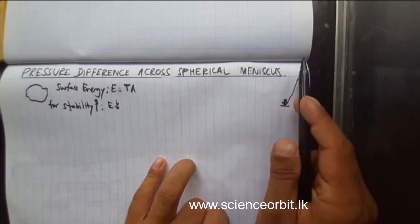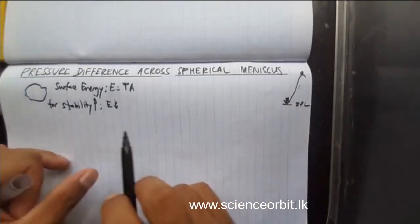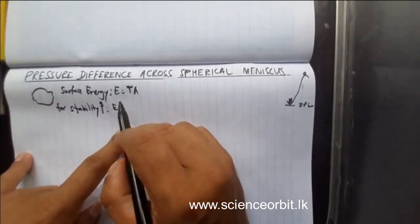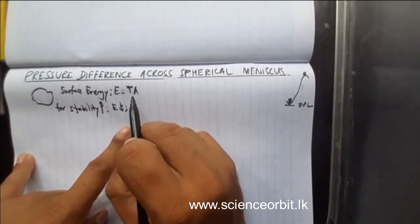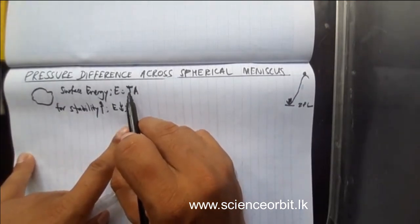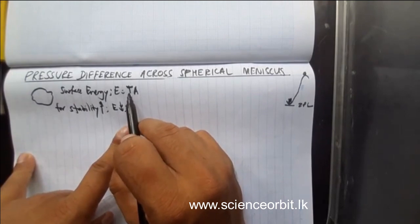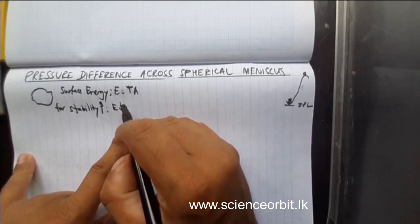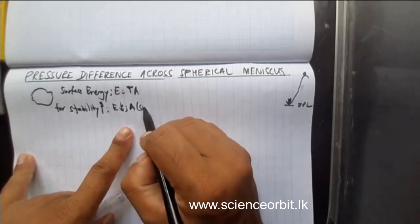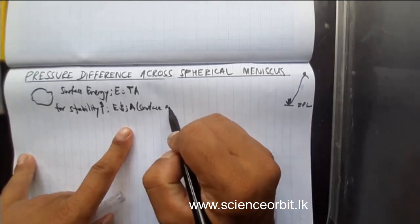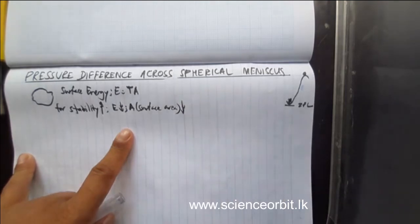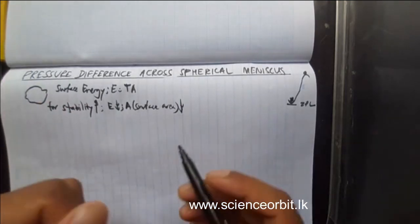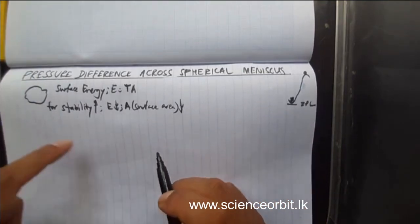This object has the highest energy, so it will have lower stability. So if you want the stability to be more, your energy has to be less. According to this equation, since surface tension for water is constant, if you want your energy to be less then your surface area A must be less. Then only the surface energy stored in the volume of liquid will be less, so that it will be more stable.